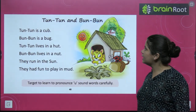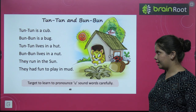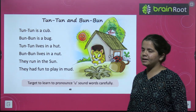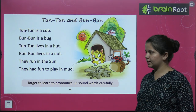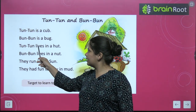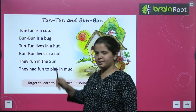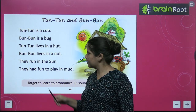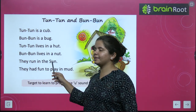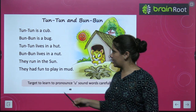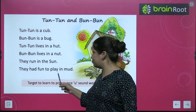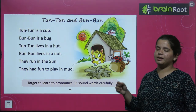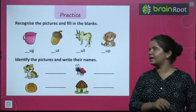Now let's read: Tun Tun and Bun Bun. Tun Tun is a cub. Bun Bun is a bug. Tun Tun lives in a hut. Bun Bun lives in a nut. They run in the sun. They had fun to play in mud. Is it clear? We have done the U-sound reading.